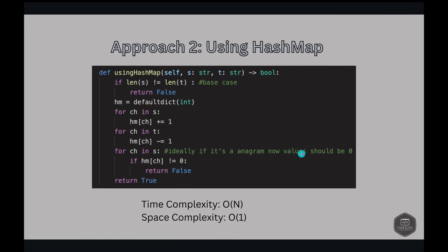Approach two is using a hash map. This method involves using a hash map to count the occurrences of each character in both strings. First, we ensure both strings are of equal length. Then we iterate through string s, counting each character's occurrences. Next, we iterate through the second string t, decrementing the count for each character. In the end, if all counts are zero, the strings are anagrams.